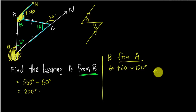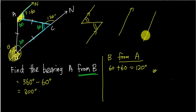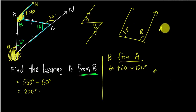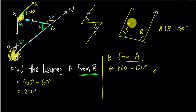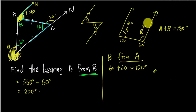When two lines are parallel, the two alternate angles are equal. Also, interior angles between parallel lines always add up to 180 degrees. So if angle A is 100, angle B is 80; if angle A is 120, angle B is 60. This concept is very important in bearing topics.